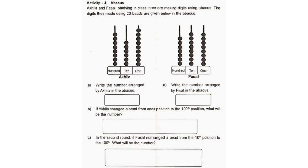Activity 4: Write the number arranged by Akila in the abacus. The answer is 869. Write the number arranged by Faisal in the abacus. The answer is 788.